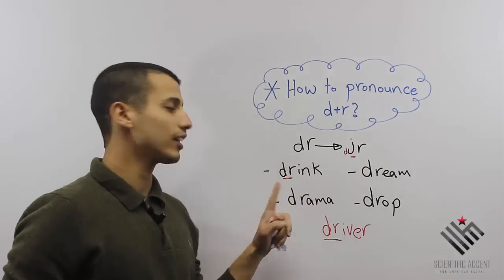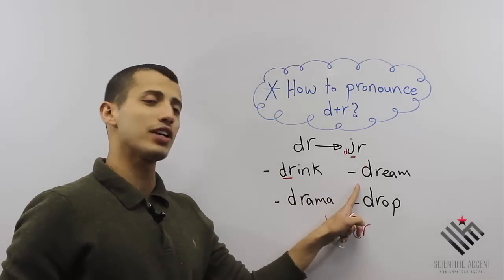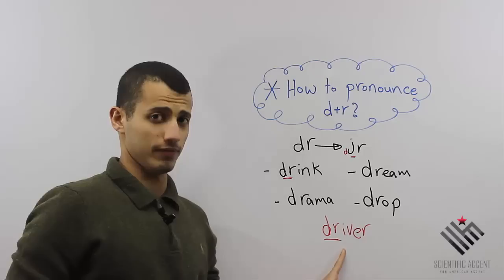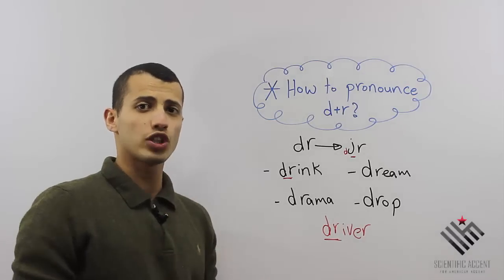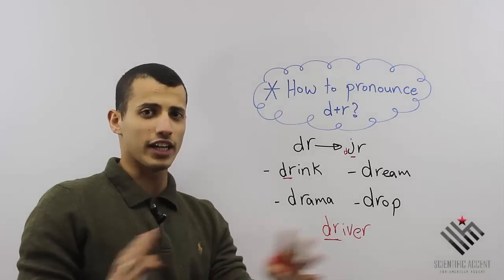So let's recap quickly: D plus R is 'juror' - drink, drama, dream, drop, and driver.